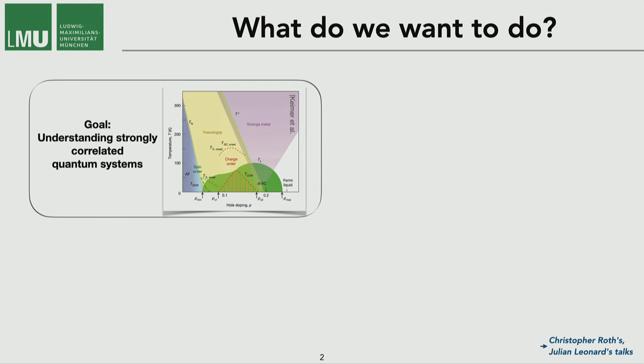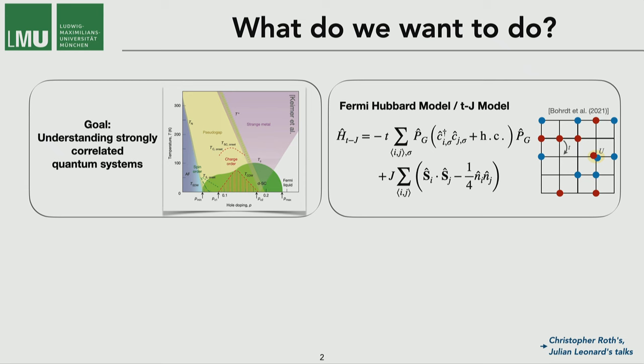On long term we would like to understand strongly correlated quantum many-body systems and one very famous example are unconventional superconductors like the Cuprate superconductors. The model that is believed to capture the physics of these materials is the Hubbard model and if we go to the strong interaction limit of large repulsion U, we can project out doubly occupied states and we end up with the TJ model.